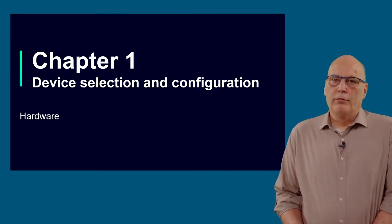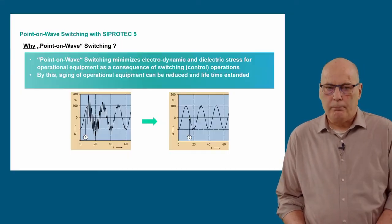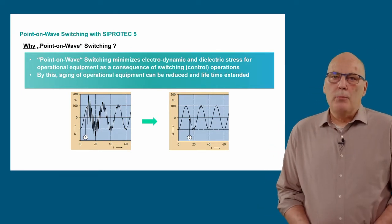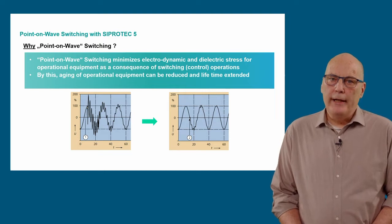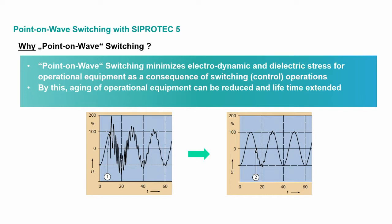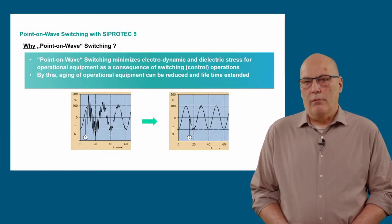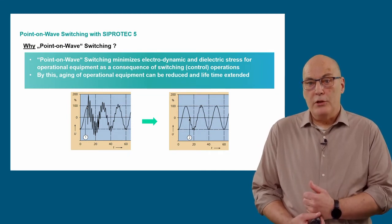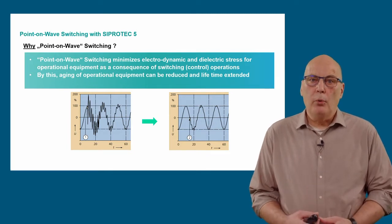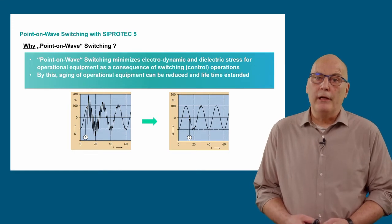Starting with Chapter 1: device selection, configuration, and hardware requirements. Where is point-on-wave switching a benefit? A capacitive load or cap bank was energized. On the left side, the instant of closing was at voltage peak and severe voltage transients are seen. These transients have the potential to severely damage plant and equipment, including the energized capacitor. On the right-hand side, the same capacitor was energized correctly with point-on-wave switching, close to the zero crossing of the voltage, resulting in almost no induced transients.